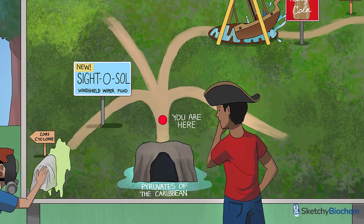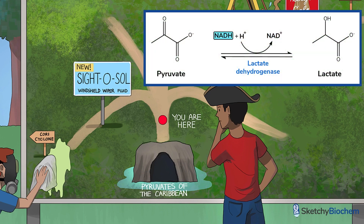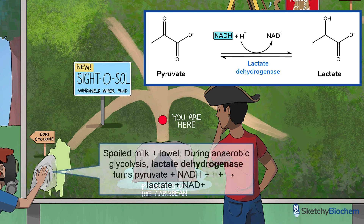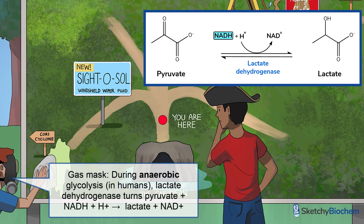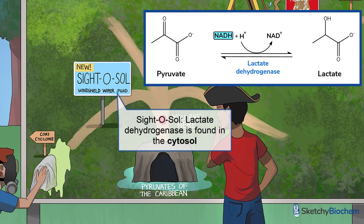We've shown a second pathway leading down to the left. Will our pyruvate kid ride the Cori Cyclone? Word on the street is that it literally takes your breath away — sayonara oxygen! This pathway represents the last step of anaerobic glycolysis and the Cori cycle. When oxygen is unavailable, lactate dehydrogenase turns pyruvate and NADH into lactate and NAD+. This step is important for regenerating NAD+ so glycolysis can continue, especially in cells that rely on anaerobic metabolism. The towel covered in spoiled milk represents lactate dehydrogenase, and the gas mask means that making lactate is an anaerobic process. This step is reversible and takes place in the cytosol, illustrated by an advertisement for Cytosol, the best wiper fluid west of the Mississippi.